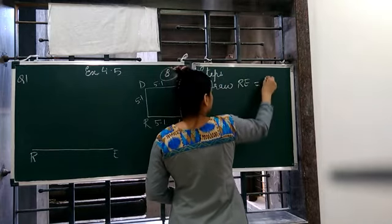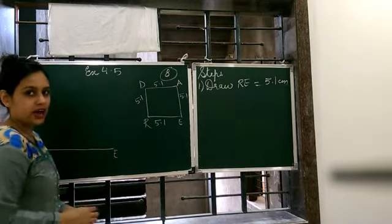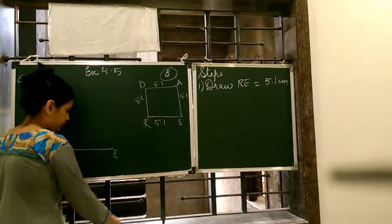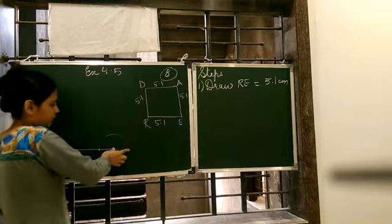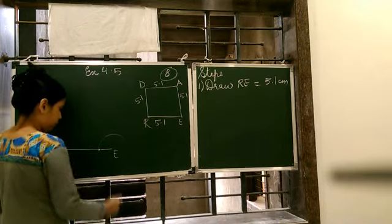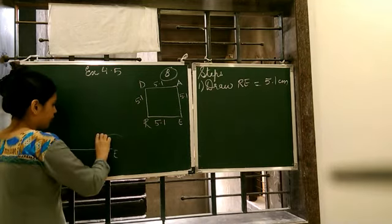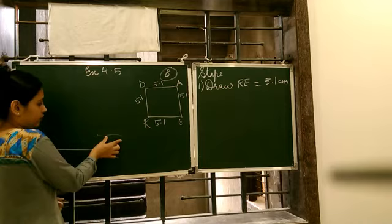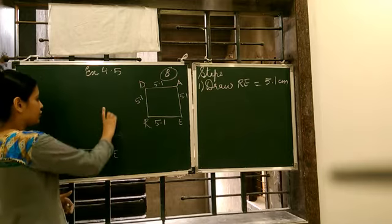RE equals 5.1 cm. Now at E, we draw an angle of 90 degrees. How to draw an angle of 90 degrees — perpendicular bisector. What to do: we draw an arc. Take the radius near to 1 cm and draw a circular arc like this. Now with the same radius at the first point of intersection draw another arc, then from the second point of intersection draw a third arc.